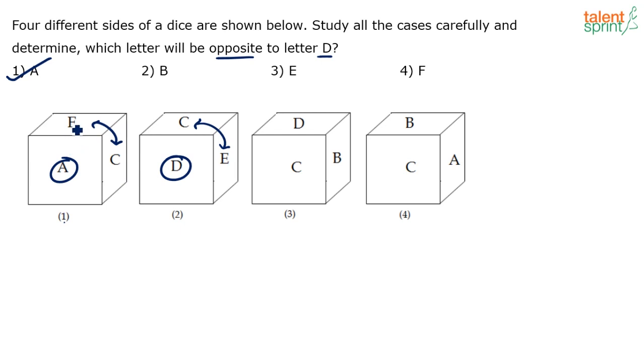See the logic: in the first figure we're saying that E and C both are adjacent to A. In the second figure we're saying that E and C both are adjacent to D. That is possible only when A and D are opposite to each other.